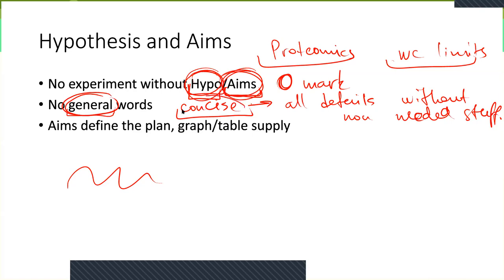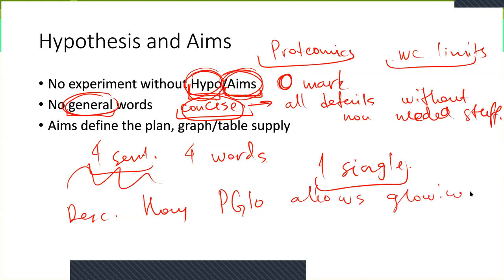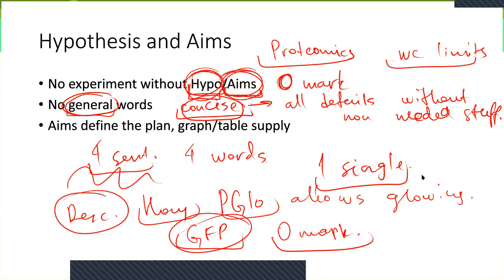For some cases, concise might mean four sentences, and for another case it might mean four words. It's never one single word, and I also saw it in your answers. Some people, on the question of describing how pGlow allows glowing, just write 'GFP' and think that is a concise complete answer. This is not — you get zero here. Why? Because it does not describe how the pGlow actually allows for glowing. Concise means all details possible without unneeded stuff.